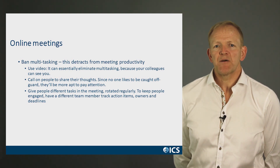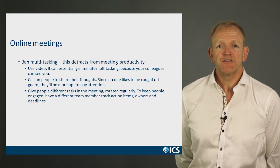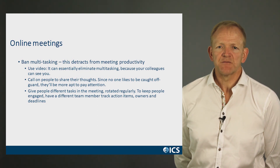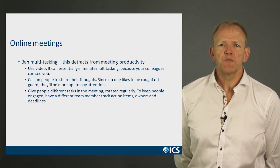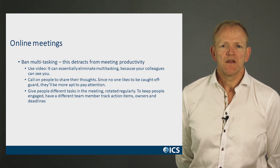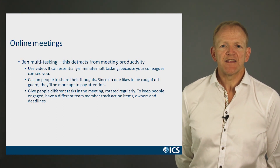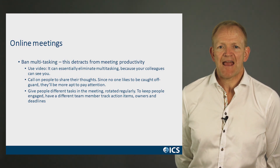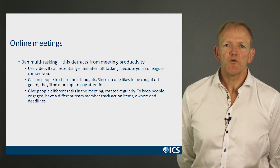One way to reduce multitasking is to use video rather than teleconference — this can essentially eliminate multitasking because your colleagues can see you. Call on people to share their thoughts; since no one likes to be caught off guard, they'll be more likely to pay attention. Give people different tasks in the meeting and rotate them regularly to keep people engaged. Have a different team member track action items, owners, and deadlines. Thank you for watching.